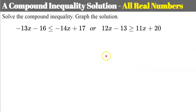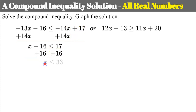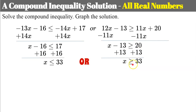Now let's look at a compound inequality with a solution of all real numbers. We have an OR: solving the first inequality, I add 14x to both sides, leaving x minus 16 less than or equal to 17. Adding 16 to each side gives x is less than or equal to 33. For the second, I subtract 11x from both sides giving x minus 13 greater than or equal to 20. Adding 13 to each side gives x is greater than or equal to 33.